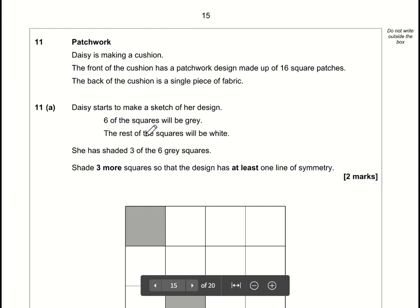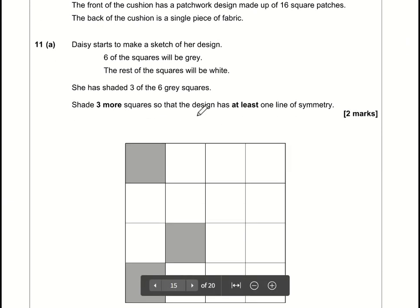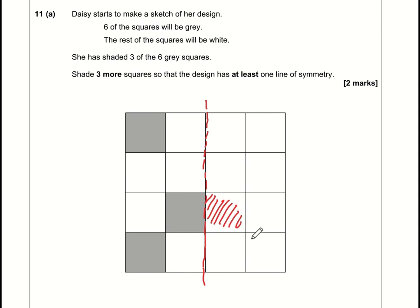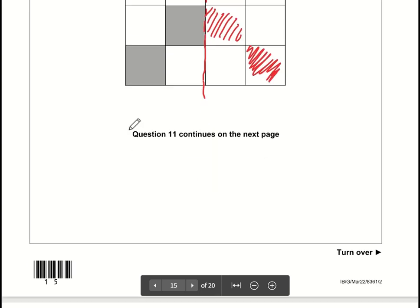Question 11: shade the grid so it has one line of symmetry. Imagining this as the line of symmetry, like folding wet ink — this square would make a print there, and this square would make a print there — so these two squares need to be shaded in. The top right also needs shading. There are other valid options, but this is the most obvious one.